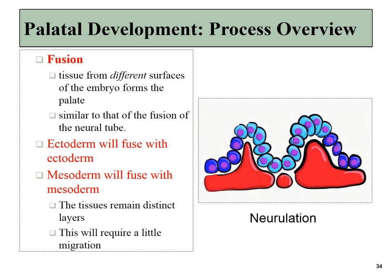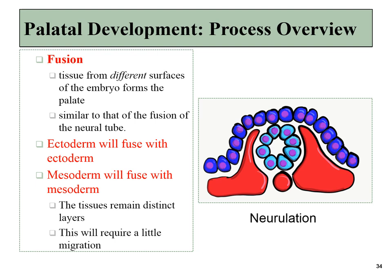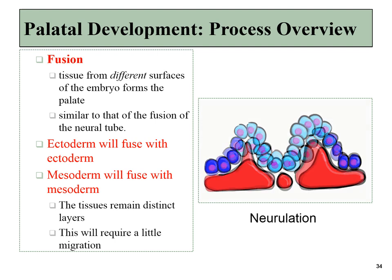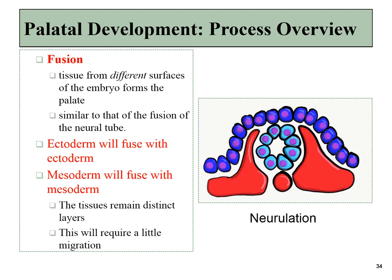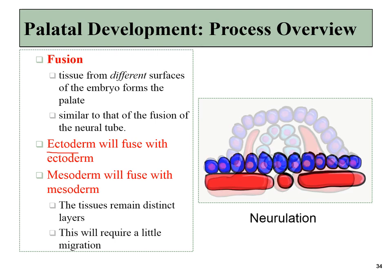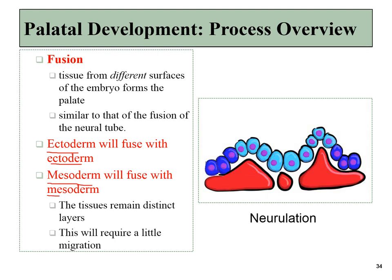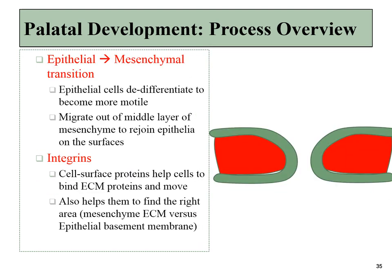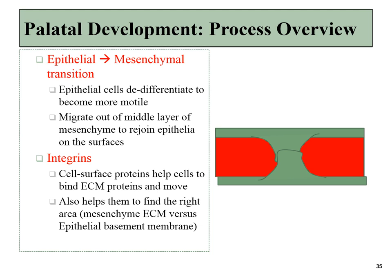To review: we already saw fusion in the previous chapter, when the neuroectodermal cells of the neural plate fused with one another and separated away from the rest of the ectoderm, forming the neural tube. Fusion of the palatal shelves will involve fusion of ectodermal cells with other ectodermal cells, and fusion of mesoderm with mesoderm. This will involve proliferation and migration. To ensure a single fused structure, some cells will have to migrate away, all mediated by cell surface receptors known as integrins. Ultimately, we should be left with structures that have an epithelial lining on one surface, but with mesoderm in the middle.